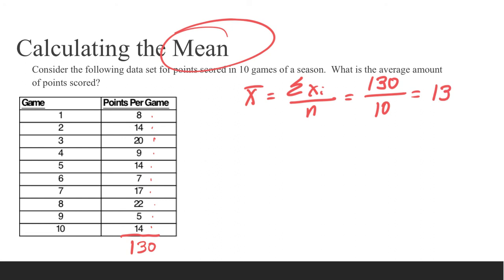So we divide those up and we see that this person averaged 13 points per game, and that is how you calculate the mean by hand.